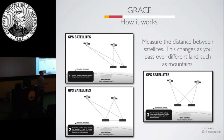The way GRACE works is that as you pass over some mass anomaly in the Earth, the first satellite senses that mass change and its orbit changes, so the distance between the two satellites increases or decreases depending on the sign of the mass anomaly. The satellites are separated in orbit by about 300 kilometers, and then the second satellite comes along and is influenced by that mass anomaly. You get a very high-frequency time series of the range and range rate between these two satellites.